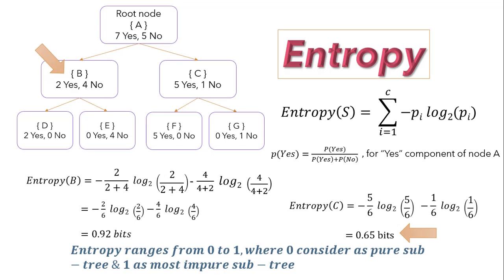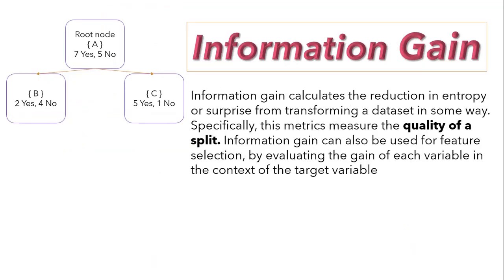It combines all the entropy together till the leaf node. Formula for information gain is entropy of S minus sigma of v to values into S_v over S into entropy of S_v. Here entropy of S we have just found out for each node, S_v is a subset after splitting, S is total subset, and entropy of S_v will be after splitting we want to calculate the entropy for particular subset.